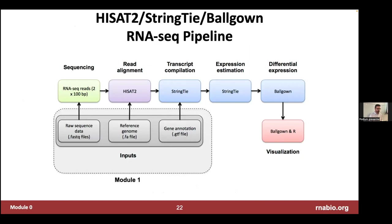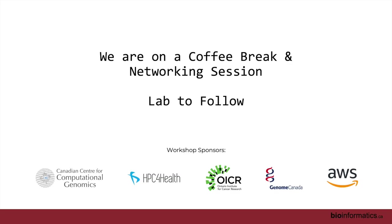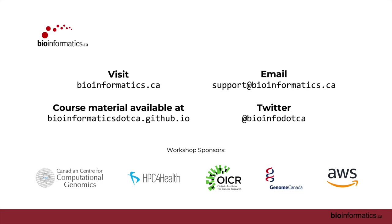That's it for the lecture. We're going to transition now into the hands-on content. This is a high-level overview of the pipeline we're going to walk through: we start with raw sequence data, align it, do a transcript compilation where we assemble and estimate the expression of individual transcripts, and then feed those into downstream differential expression, pathway analysis, and visualization modules. But before we get to that, we're really going to study the fundamentals of the input data files from a bioinformatics perspective.